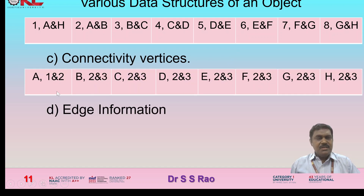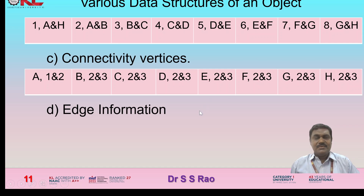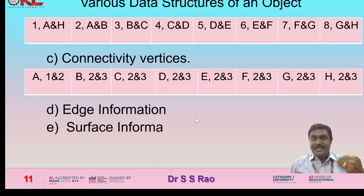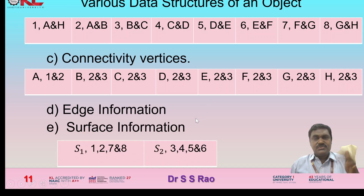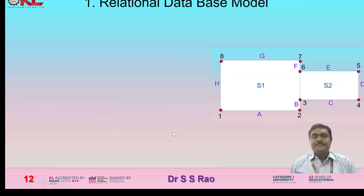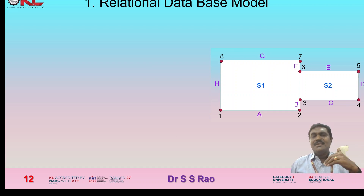For edge information: edge A is connected with points one and two, edge B with two and three, edge C with three and four, edge D with four and five, and so on. For surface information: surface S1 is bounded by vertices one, two, seven, and eight; surface S2 is bounded by vertices three, four, five, and six. These are the different ways to arrange the database for an object.